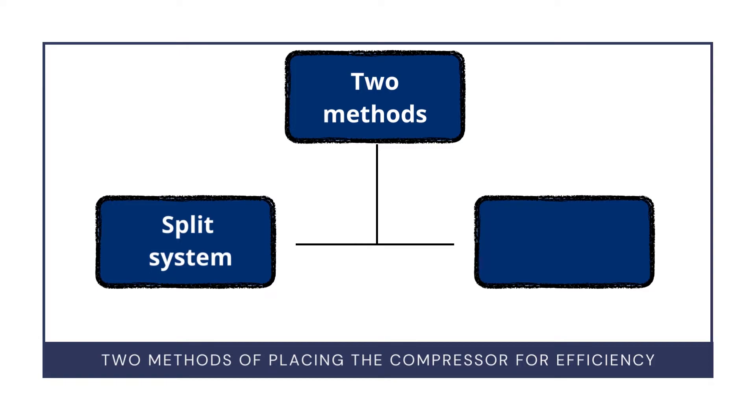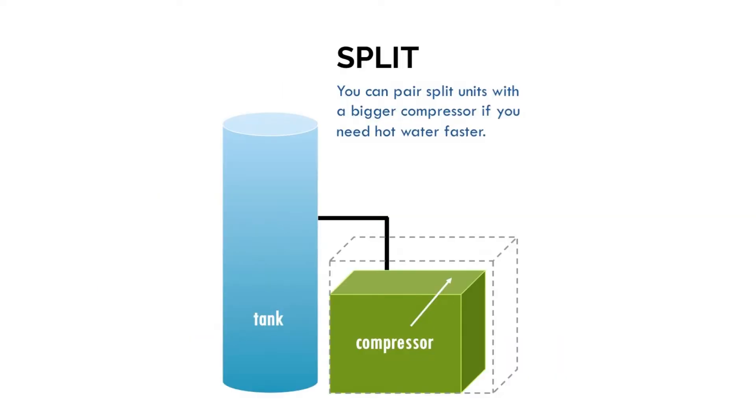Split system: In this, the compressor is separated from the water tank, means it is placed separately. The compressor is large here. The larger the compressor, the quicker the heat pump can generate hot water. Split system is better for people with large numbers and if hot water is required frequently for every hour. It is lesser in price because they are the older version of heat pumps.